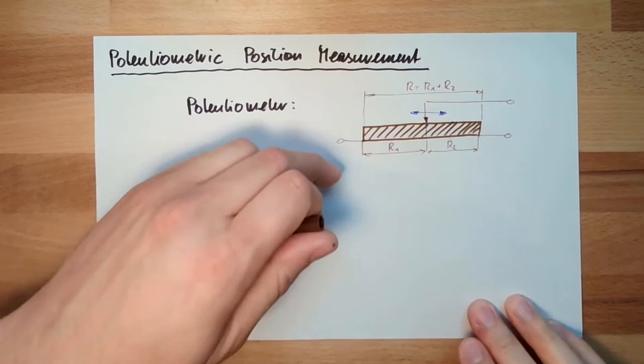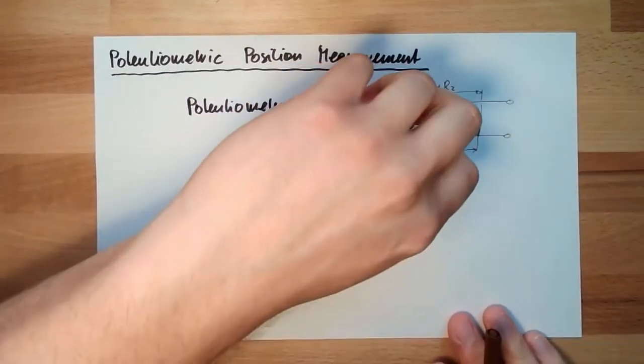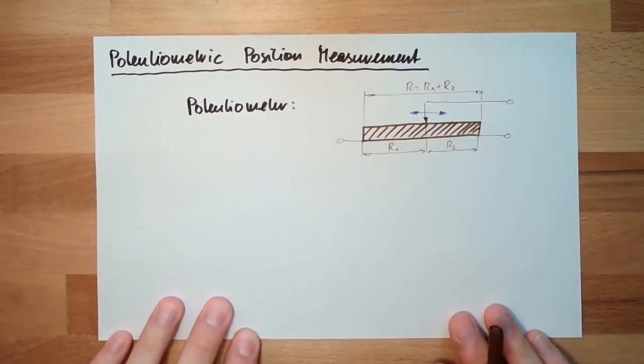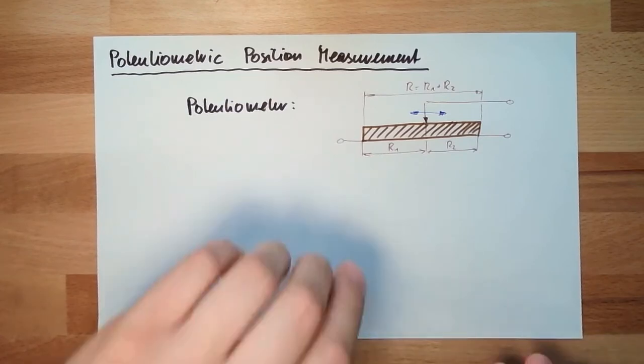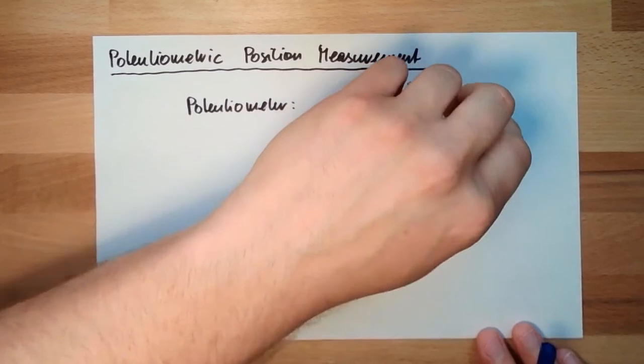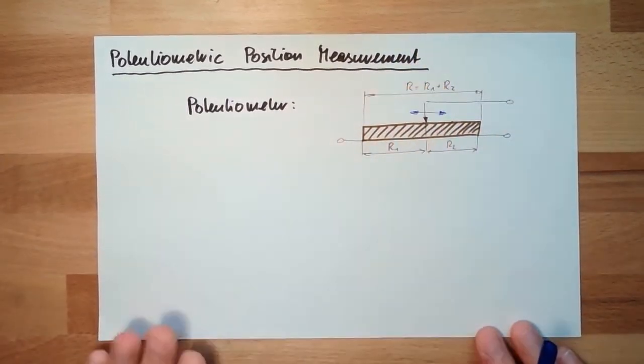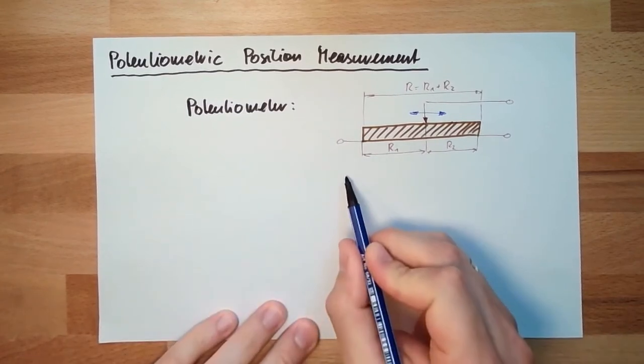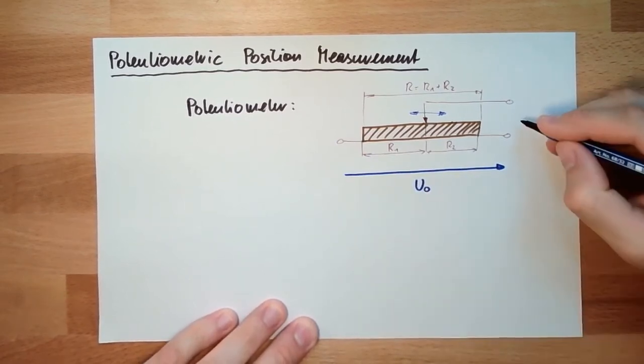R1 and R2 always fit together. This means if I move the contact and R1 is getting smaller, R2 is getting bigger. If I now measure the resistance between two contacts, I know exactly where the thing is located. How do I measure? I just apply here a voltage U0 and I measure here the voltage U2.